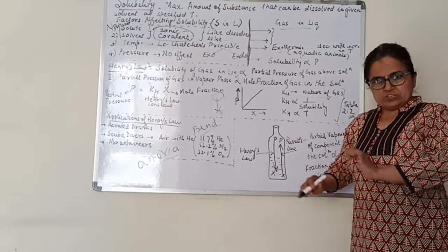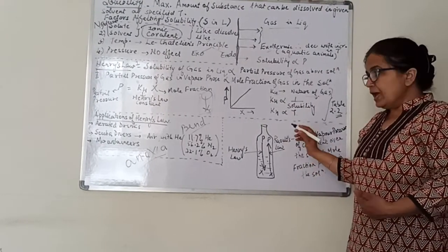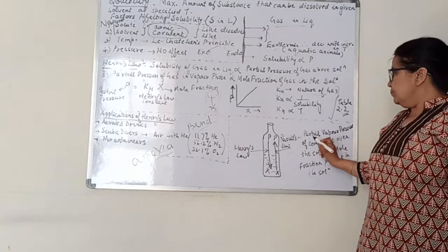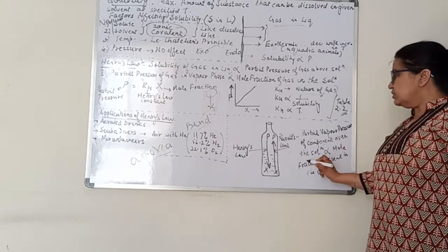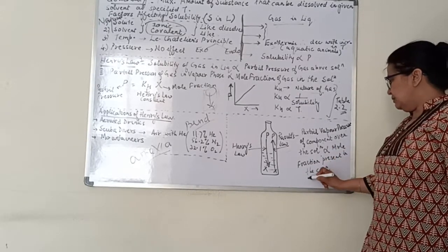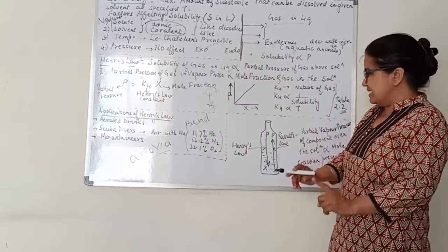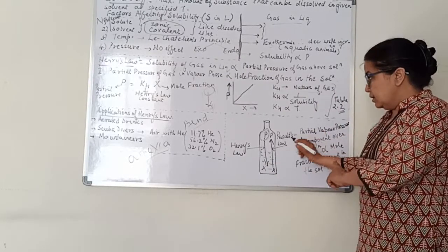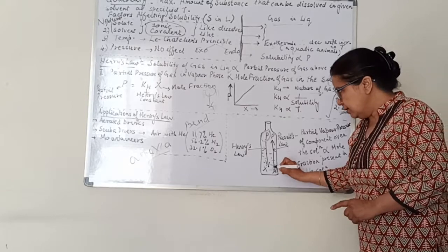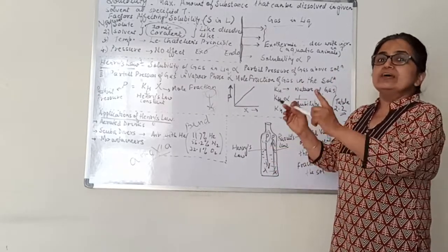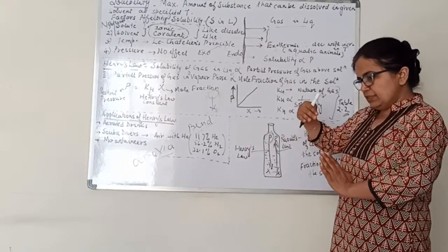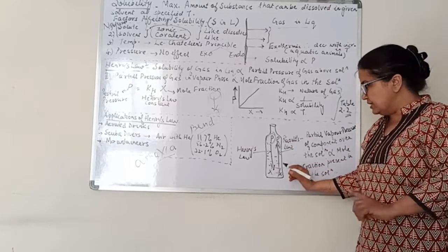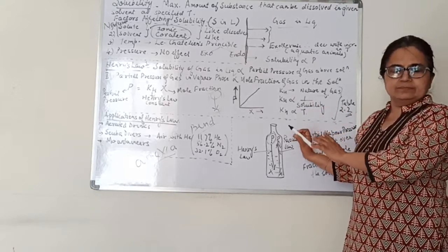There is one more law called Raoult's Law. Henry's Law and Raoult's Law are essentially reverse of each other. Raoult's Law states: the partial vapour pressure of a component over the solution is directly proportional to the mole fraction of that component present in the solution. Henry's Law says more partial pressure above means more mole fraction dissolving inside. Raoult's Law says more mole fraction inside means more vapour pressure created. So the two laws are related but work in opposite directions.